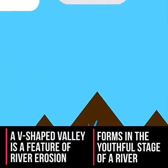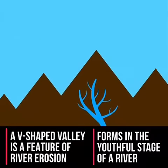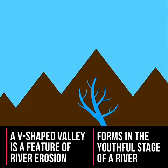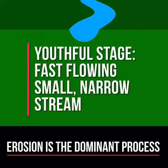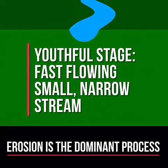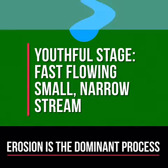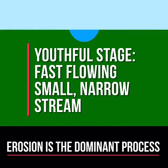A V-shaped valley is a feature of river erosion which forms in the youthful stage of a river. In its youthful stage a river is fast flowing but is generally a small narrow stream. Erosion is the dominant process.